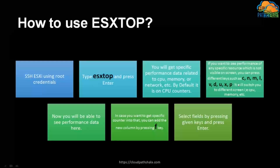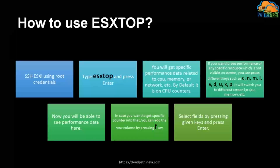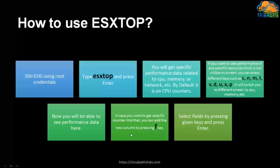The switches you can use are: C for CPU, N for network, M for memory, I for interrupts, V for virtual disk, D for disk, U for LUNs, P for power, and X for vSAN. Those are the switches you can use to see and analyze performance data.